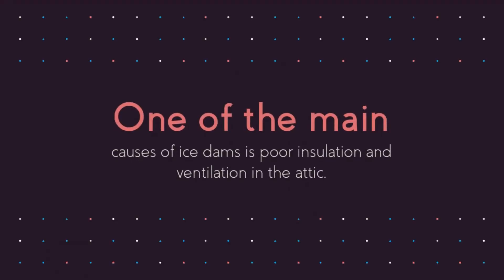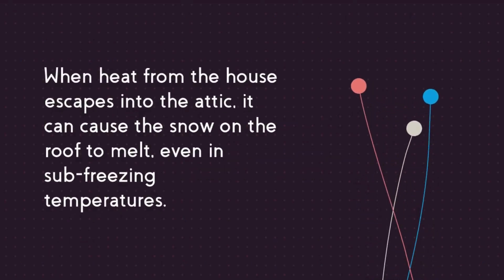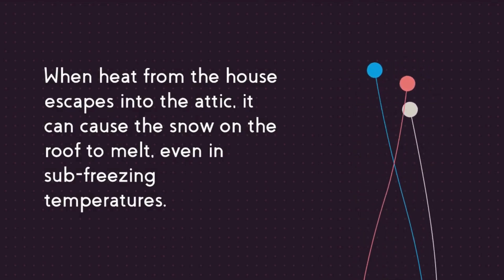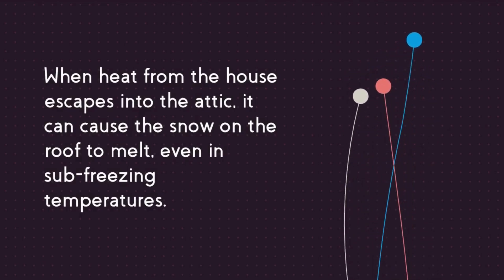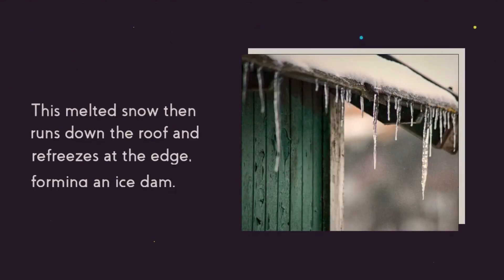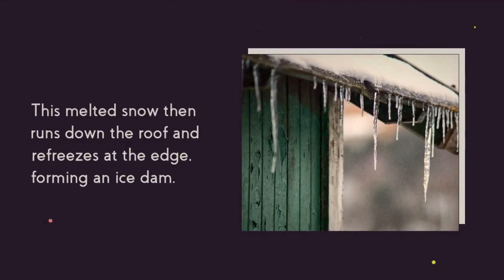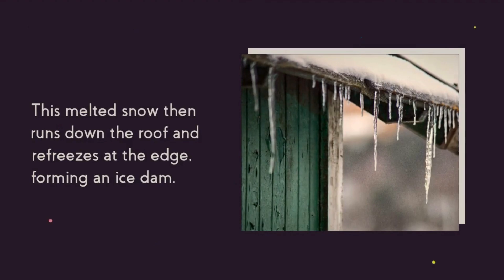One of the main causes of ice dams is poor insulation and ventilation in the attic. When heat from the house escapes into the attic, it can cause the snow on the roof to melt, even in sub-freezing temperatures. This melted snow then runs down the roof and refreezes at the edge, forming an ice dam.